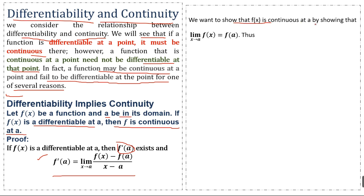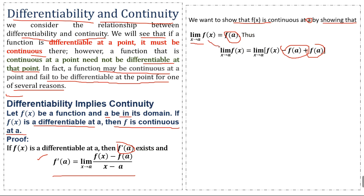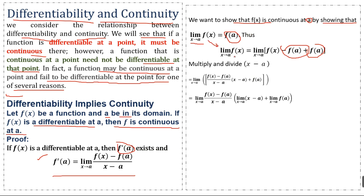We want to show that f(x) is continuous at point a by showing that the limit as x approaches a of f(x) equals f(a). To do this, we add and subtract f(a) in the expression, then multiply and divide by (x − a), giving the new expression: [f(x) − f(a)] / [x − a] · (x − a) + f(a).